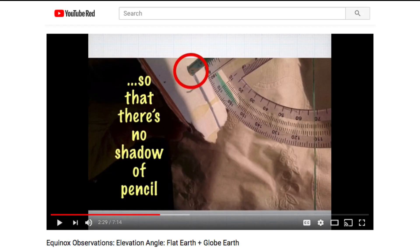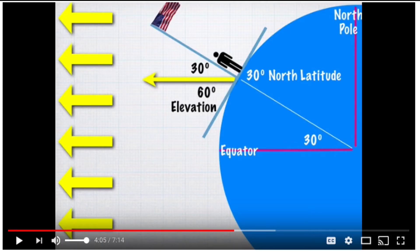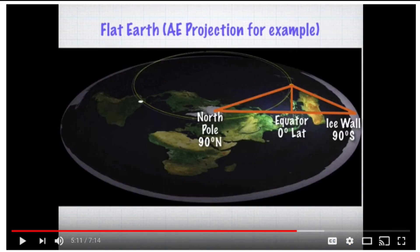Number three: elevation angle of the sun. You make yourself a plastic solar clinometer using a plastic protractor. If you point it at the sun and take the protractor reading, on the globe earth model you simply take 90 minus your angle of elevation and you'll get your latitude. Whereas if the earth is flat, you can triangulate how high the sun is in the sky.